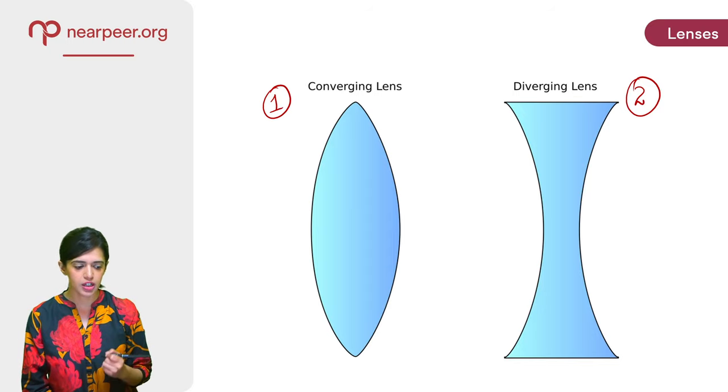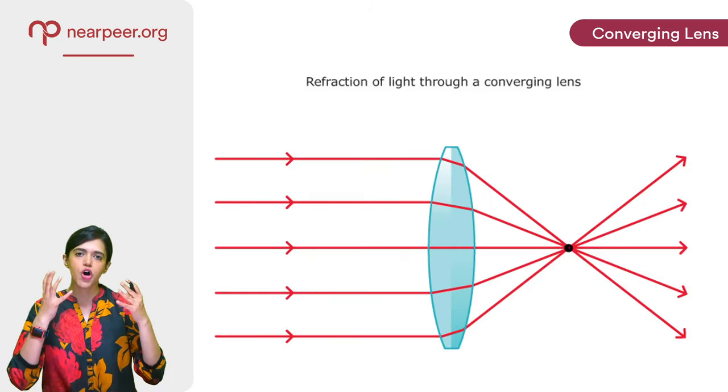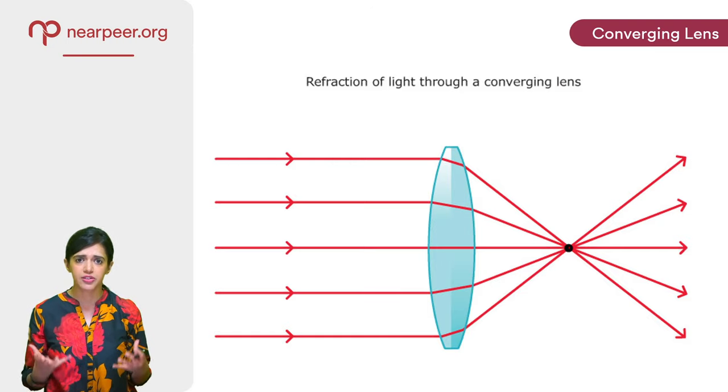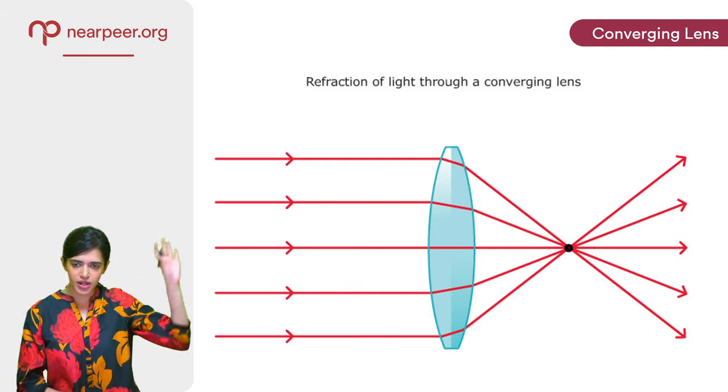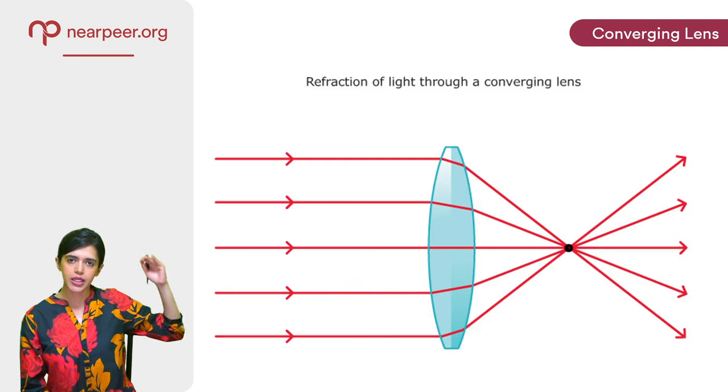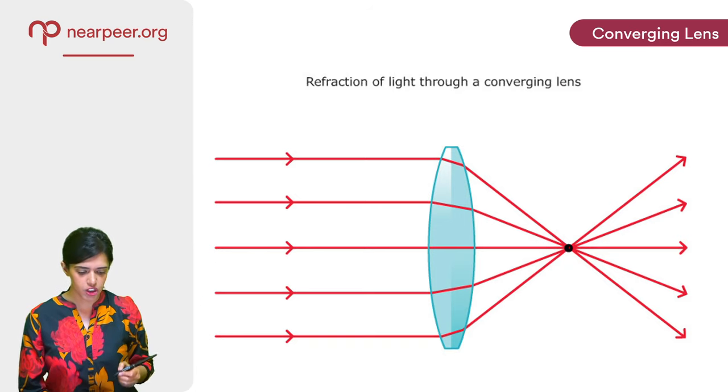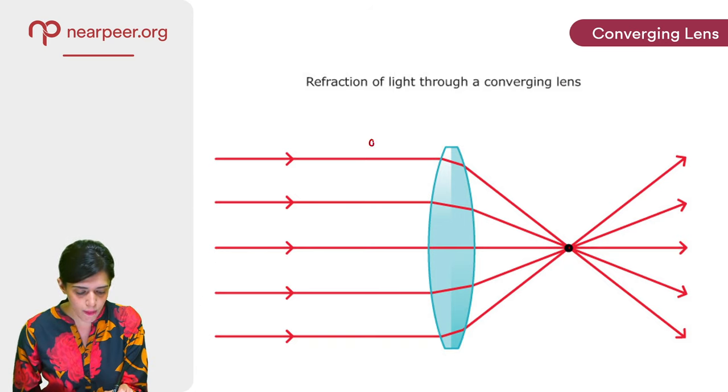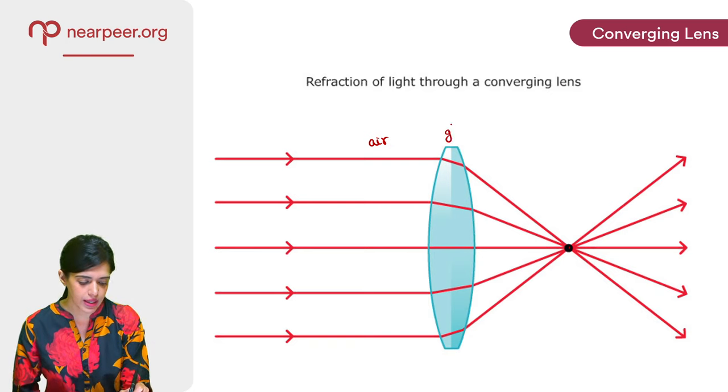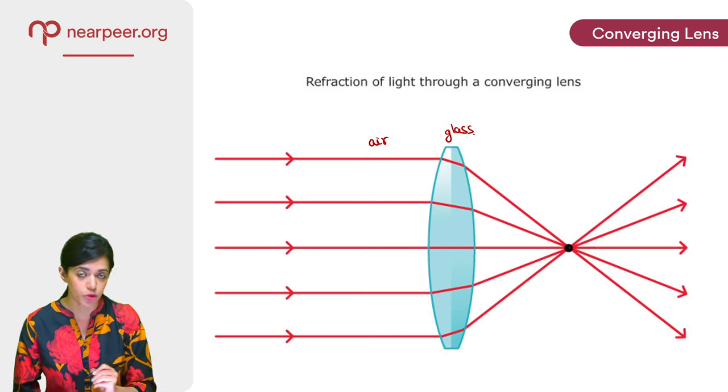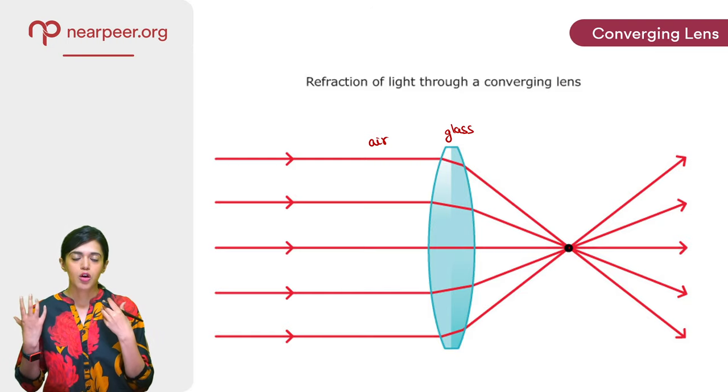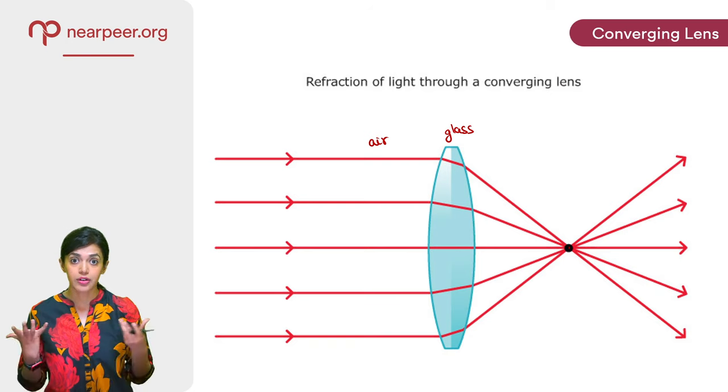So as the name suggests, a converging lens is one which converges rays of light to a point. That is a very simple description of a converging lens. So what exactly is happening over here? You see all these parallel rays, they are incident onto this converging lens. Now these rays of light, they are entering glass. They were initially in air and now they are entering glass. What happens when a ray of light enters glass from air? Refraction.